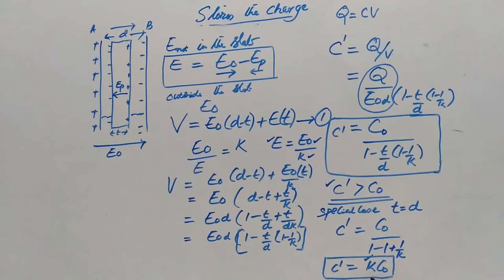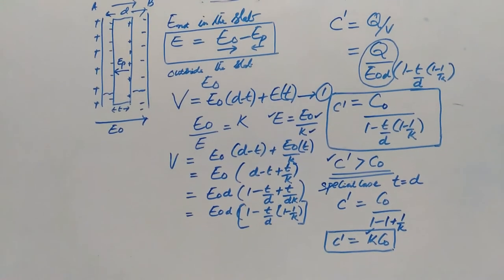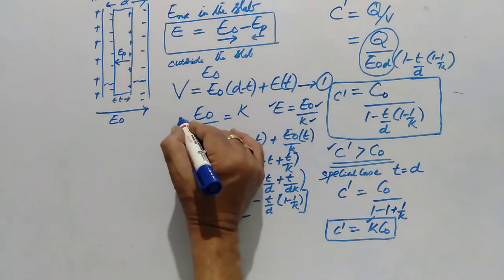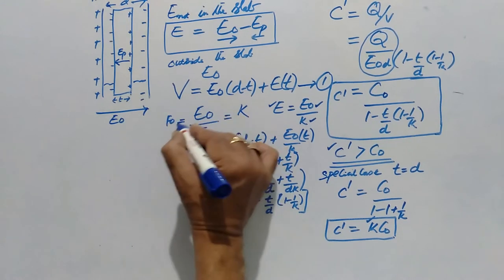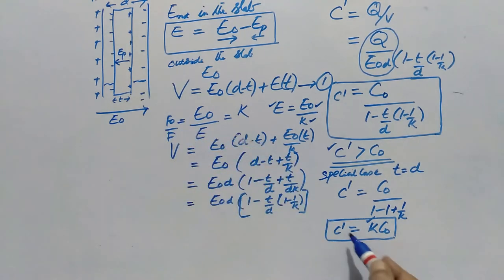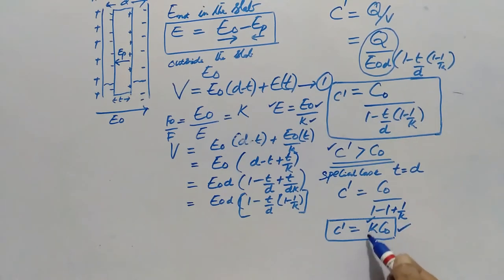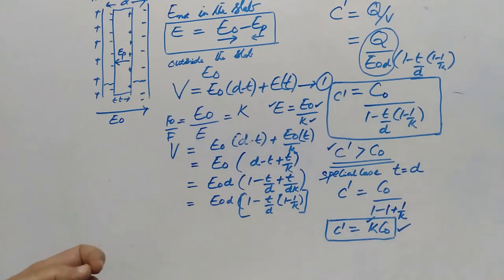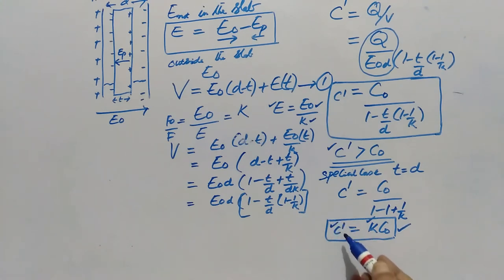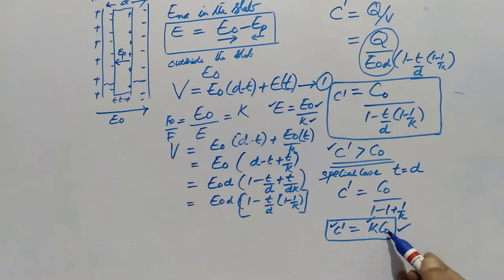So this gives another definition of the dielectric constant. We had defined K as F₀ by F, or E₀ by E. Now we also have K equals C dash by C₀. If you can measure capacitance with and without the dielectric using a meter, the ratio gives the dielectric constant of that material, provided T equals D — the slab fully fills the gap.